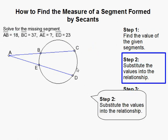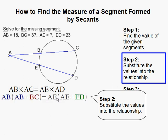Once we know all these, we can substitute those into the relationship. This relationship is AB times AC equals AE times AD. So this times the whole thing equals this times the whole thing.